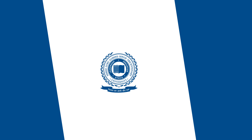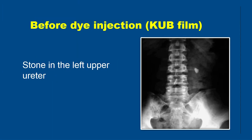Now let's discuss briefly the common findings seen in some pathologies on IVU. This is a plain KUB film in which we can see a well-defined radio-opacity in the left renal region just in relation to the transverse process of the third lumbar vertebra — this was a calculus in the left ureter.